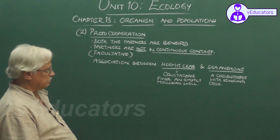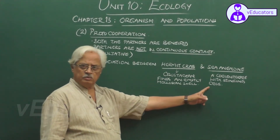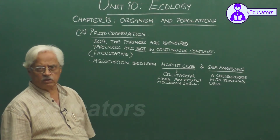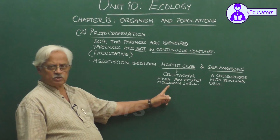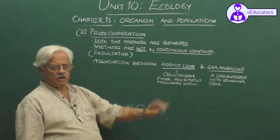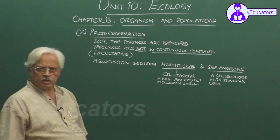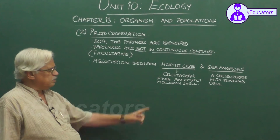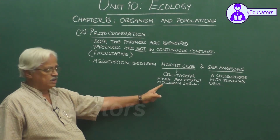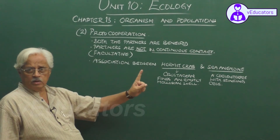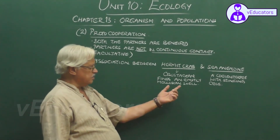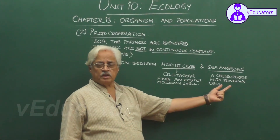Both of them are benefited. The sea anemone is a sedentary animal, incapable of locomotion, and is normally attached to a substratum. When attached to the hermit crab's shell, wherever the crab moves, the sea anemone gets free transport and is exposed to a variety of food. In return, the stinging cells of the sea anemone protect the hermit crab from predators. So, hermit crab gets protection; sea anemone gets transport and food.